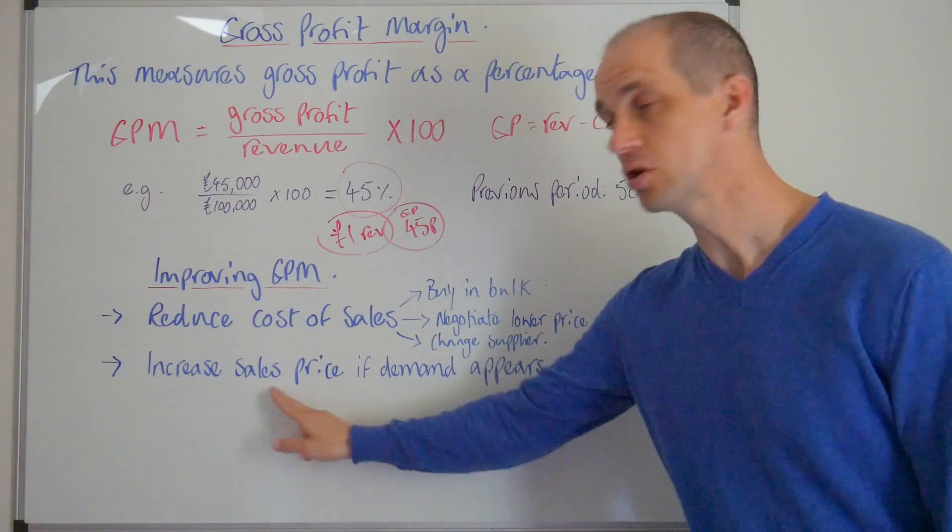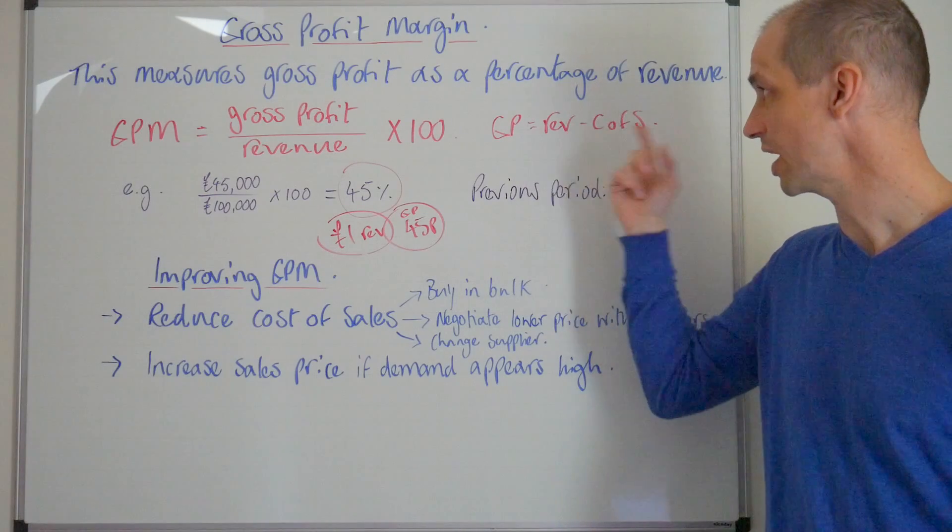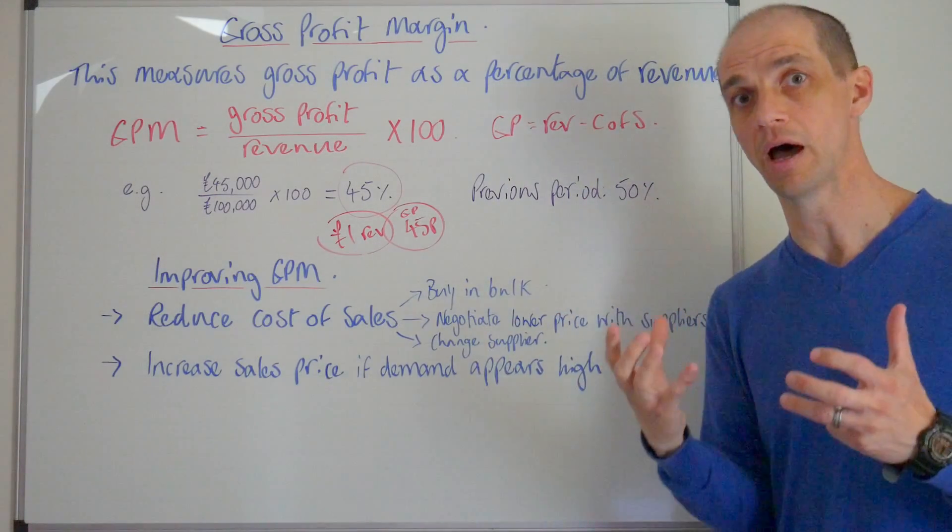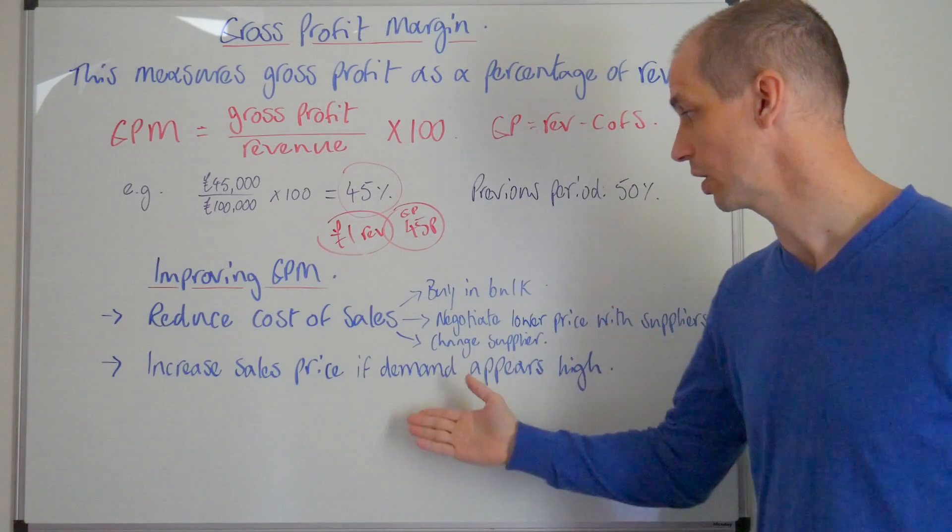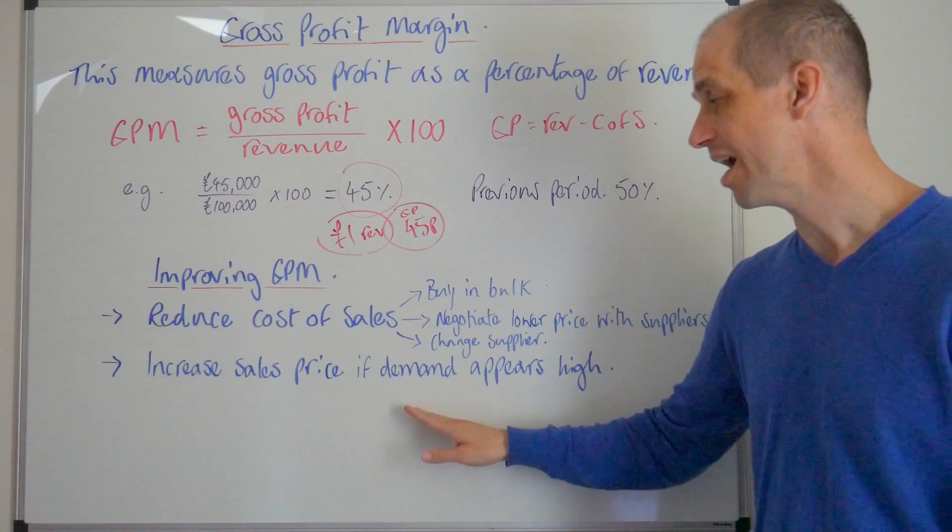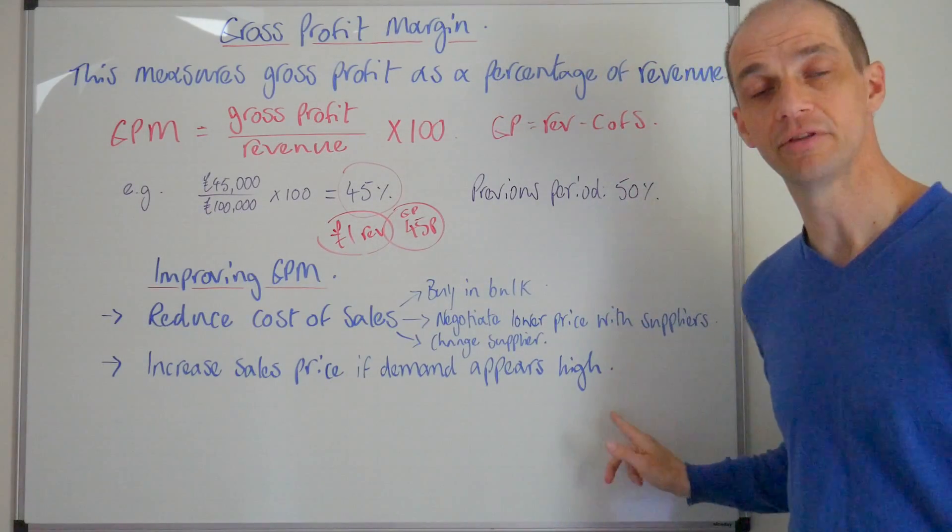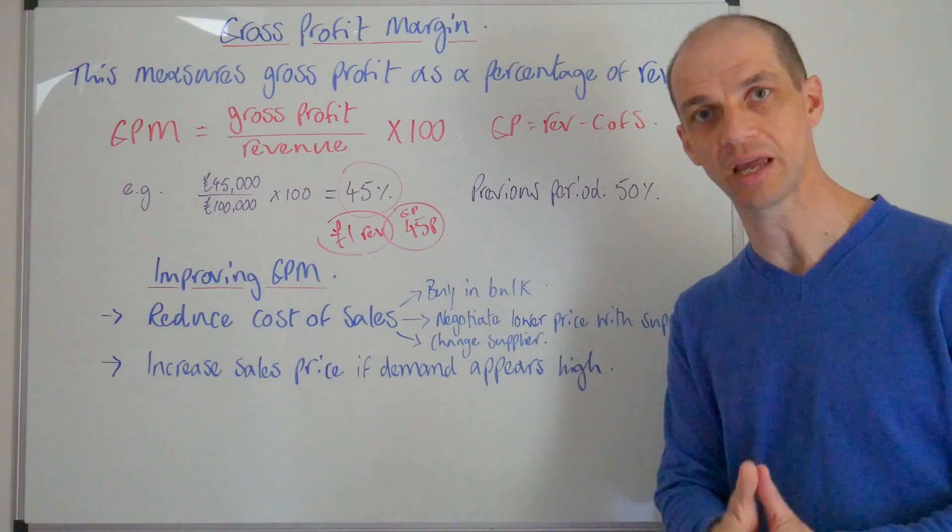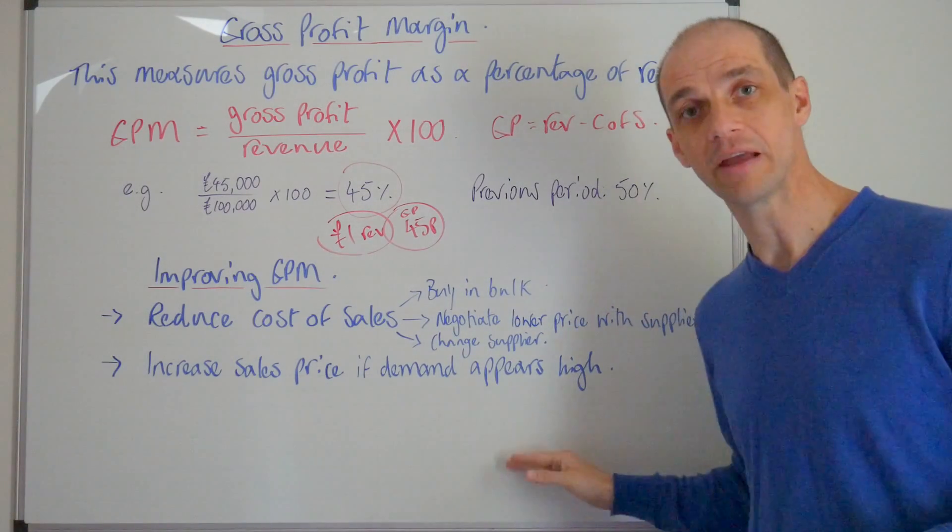Our second method here, you could increase the sales price. So if this cost of sales has actually increased because of rising inflation, i.e. the actual stock that you're buying is more expensive than it was in the last period, then you may be able to get away with increasing the price, particularly if the demand for your product is high or if your product has certain unique characteristics and doesn't have direct substitutes.